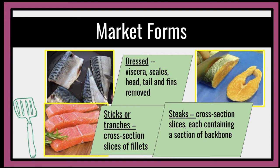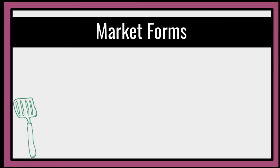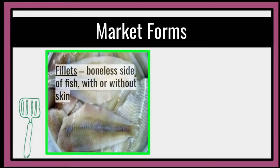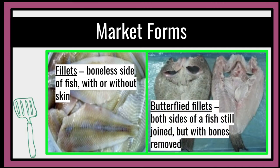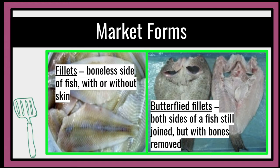Let's take a look at the market forms. These are fillets, which are boneless sides of fish, with or without skin. And butterflied fillets — both sides of a fish, still joined but with bones removed. These are the daing in the Philippines.